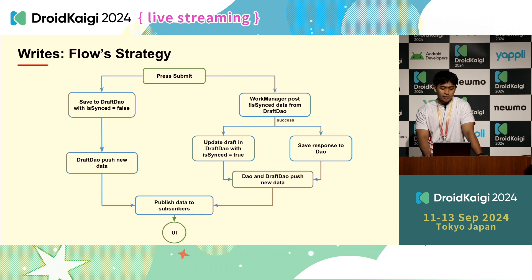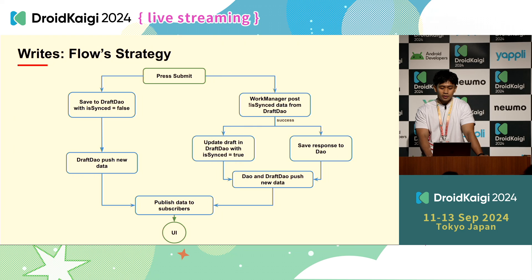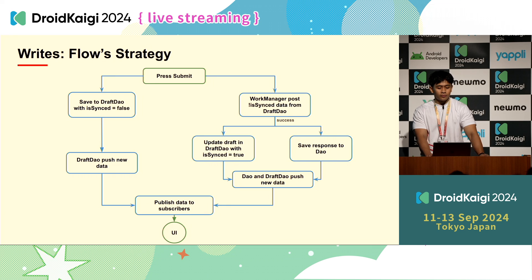For those who want to make an offline-first app, in the write strategy: first, make sure that after user input, data shows on screen and does not duplicate with the synced one after it successfully syncs. And because it's an offline-first app, we need to make sure we can get the proper time for input — though this depends on your app requirements. To summarize the write strategy: when the user presses submit, we save the draft to draft DAO with isSync false, then draft DAO pushes new data to subscribers and the UI updates. At the same time, WorkManager posts unsynced data to the API; on success, we update the draft in draft DAO with isSync true and save the API response to DAO, which pushes updates to the UI as well.